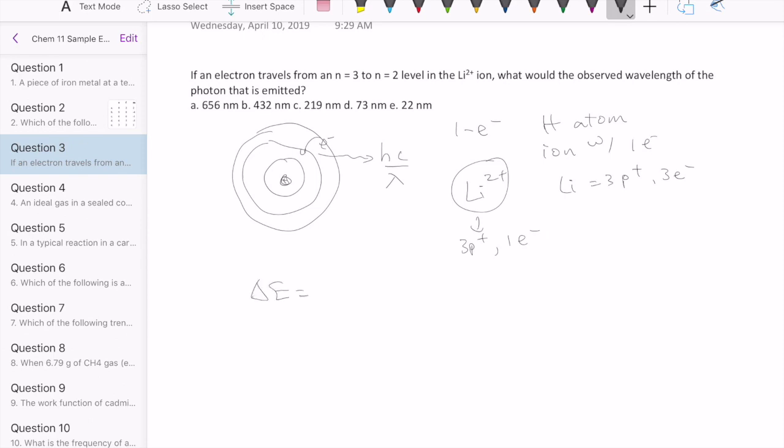The Bohr model, the equation that we use to calculate the energy transition, is this equation right here, which is negative RH times z squared, which is the atomic number of that element, one over the final orbit value squared, and minus one over the initial orbit value squared. So that would give us the actual energy that the electron releases when it falls from a higher to a lower orbit.